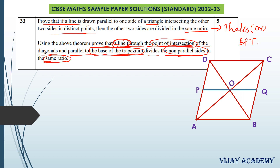This is the figure where ABCD is a trapezium in which the diagonals AC and BD intersect each other at O, which is the point of intersection of the diagonals. Then we draw the line PQ passing through the point of intersection of the diagonals and also parallel to the base AB and CD.